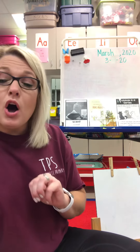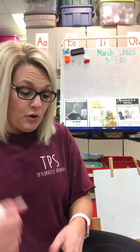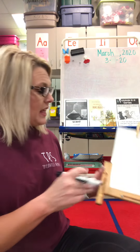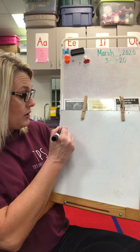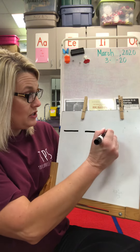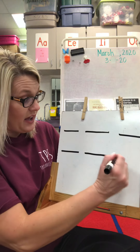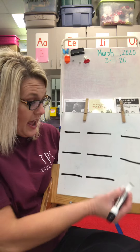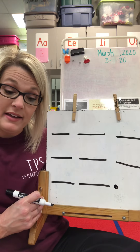Now, if you need helper lines on your board — or on your paper, you don't have a board — you may put some. So I would put, because I'm writing eight words: one, two, three, four, five, six, seven, eight. And I'm going to go ahead and put my punctuation down there because I know I need that.